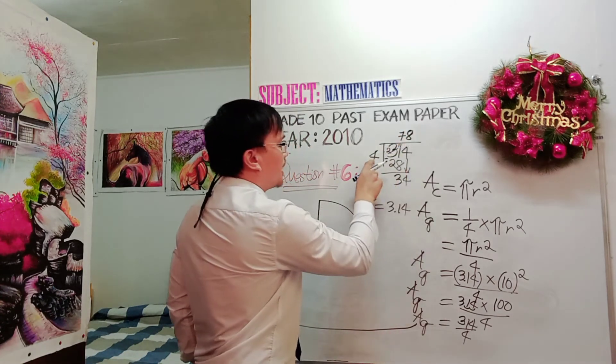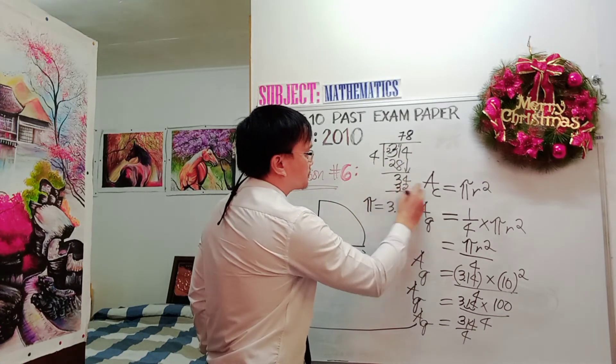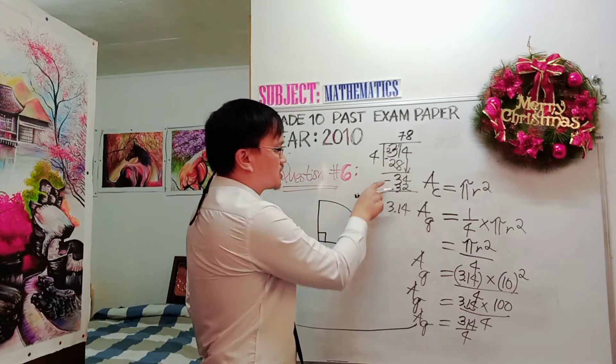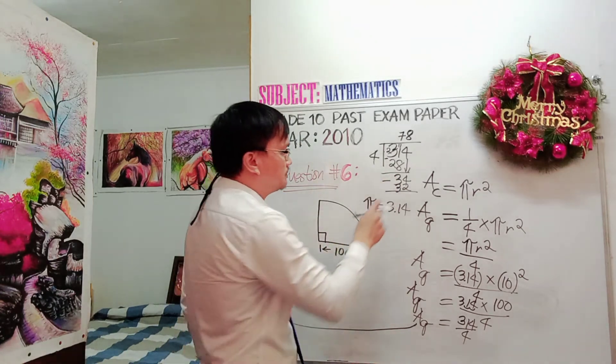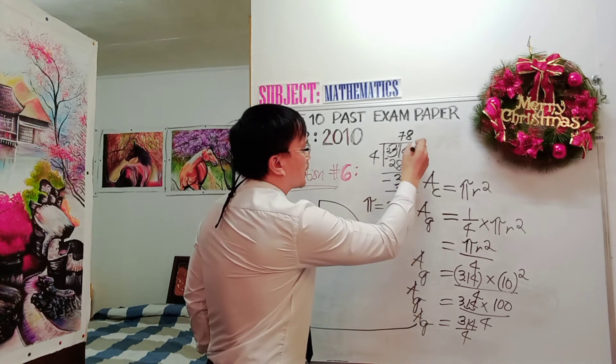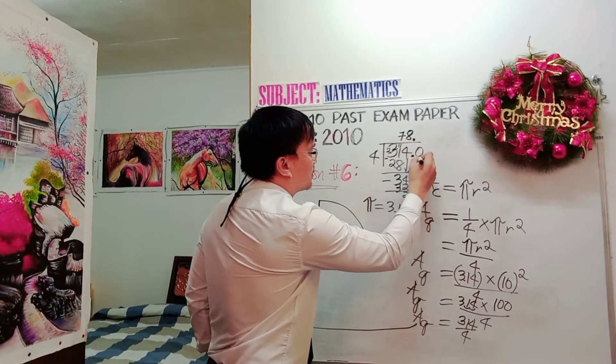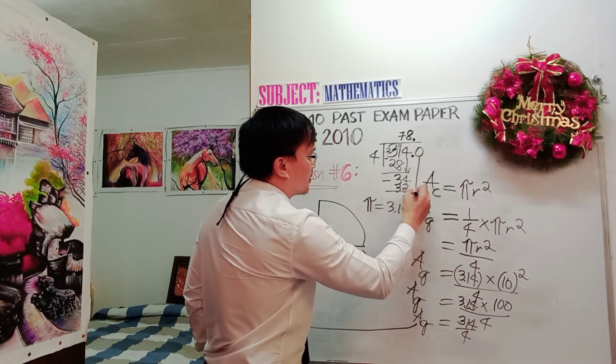8 times 4 is 32. My operation here is subtraction. 4 minus 2 is 2. Decimal point, decimal point. Add 0. Bring down that 0 over here.